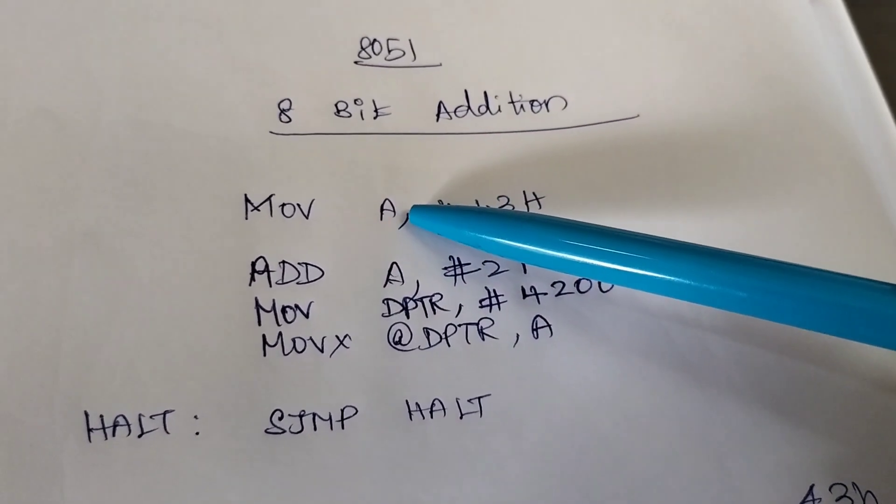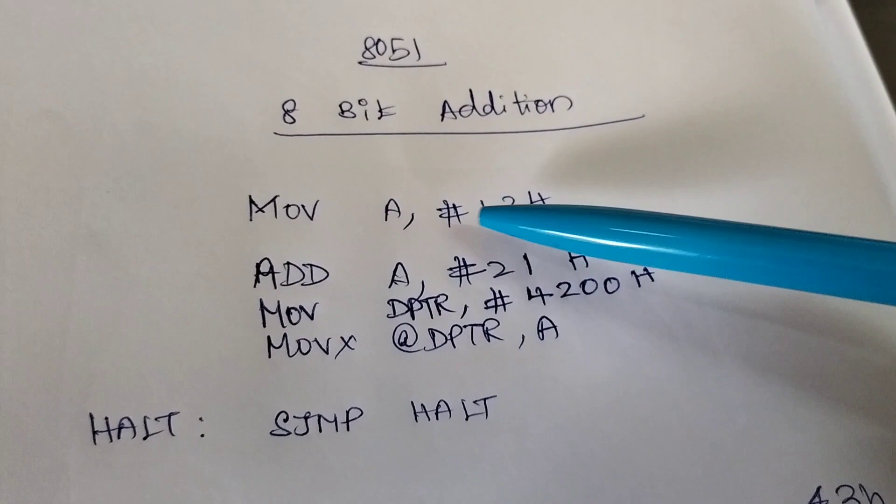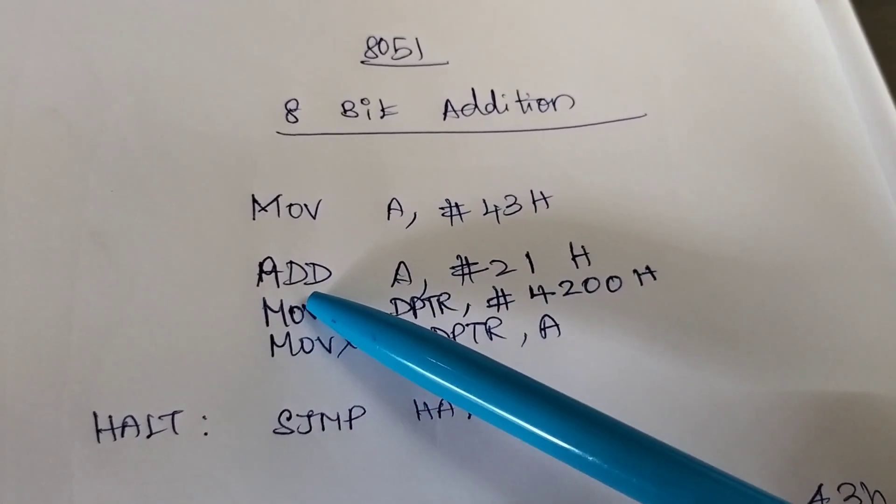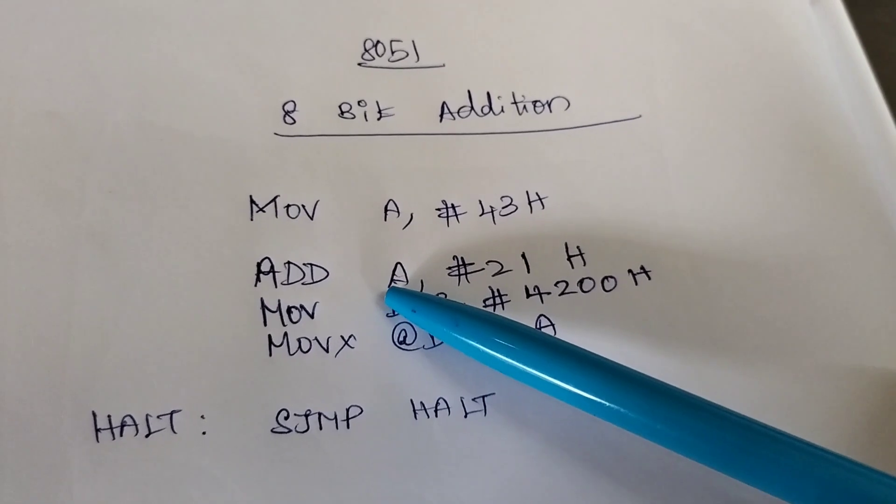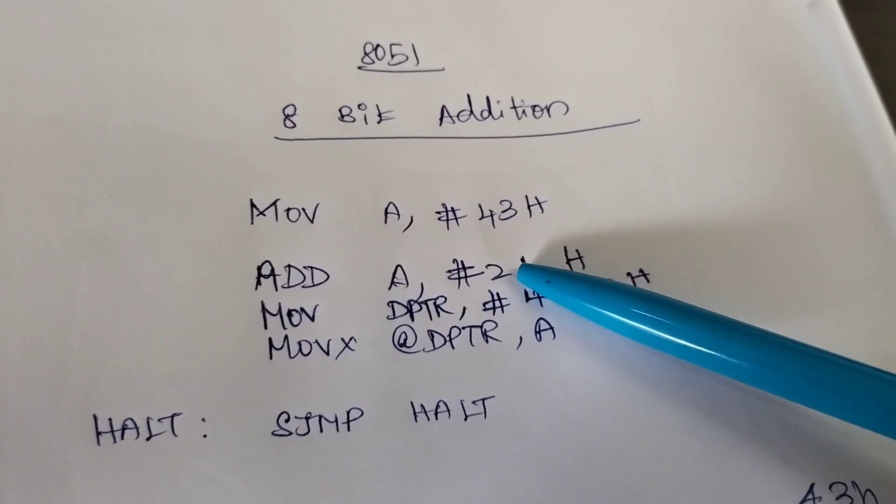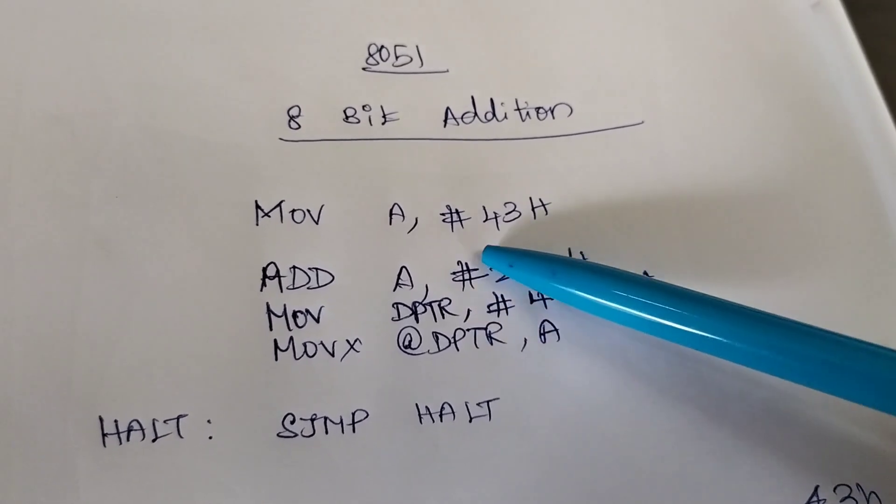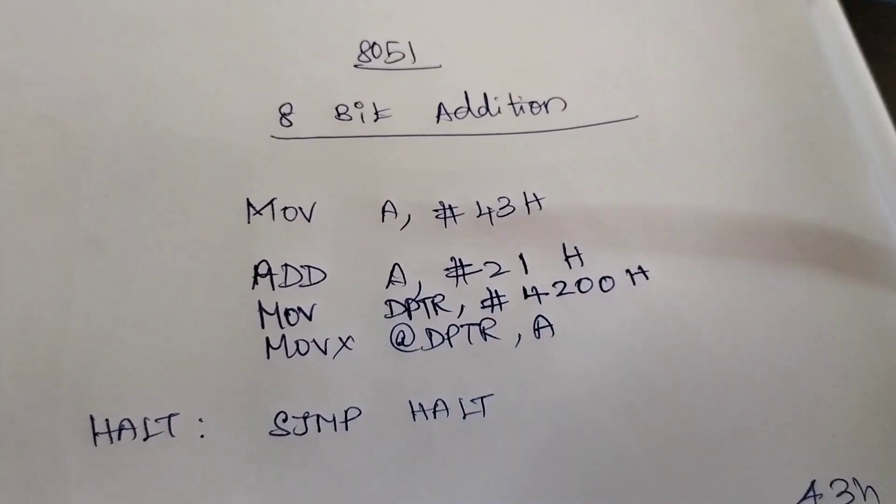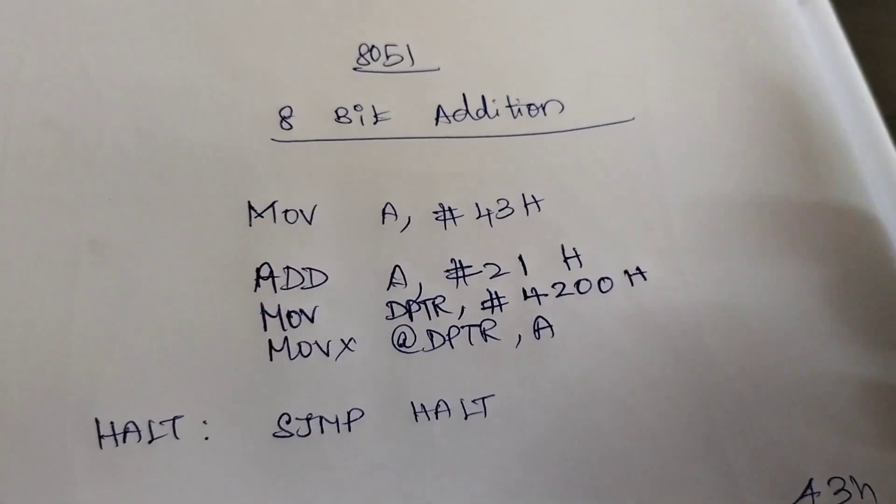Now we have to add the first data with the second data. So we are going to use the instruction ADD, so addition operation. This is also immediate addressing mode. So 21 is added with the data available in the A register and again the result will be stored in the A register.